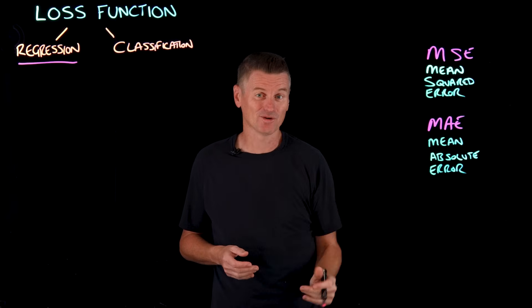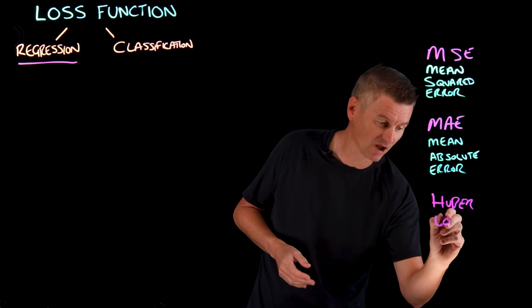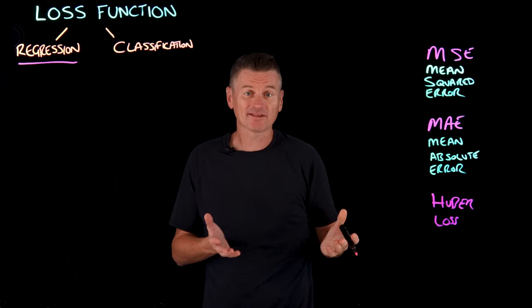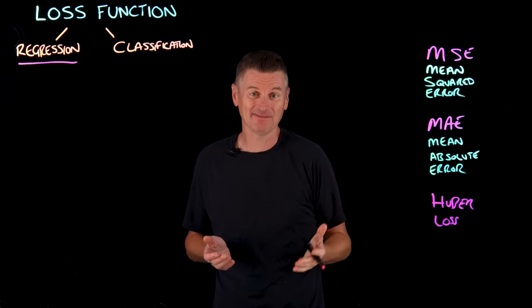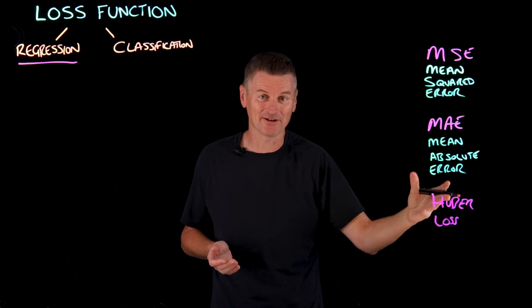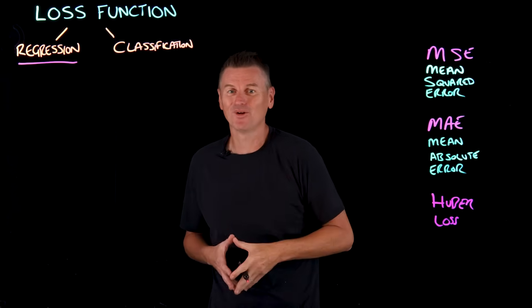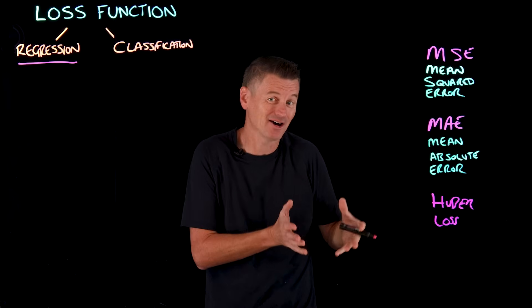But there is a third choice, called Huber loss. Huber loss is a compromise between MSE and MAE. It behaves like MSE for small errors and like MAE for large errors, which makes it useful when you want the benefits of penalizing large errors, but not too harshly.